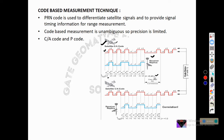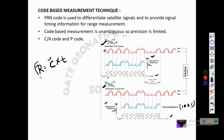The shifting continues until it reaches plus one correlation, which is 100% correlation. The receiver then calculates how much time it took to reach 100% correlation. That time is used to calculate the distance from the satellite. If the time is t, then the distance r is calculated as r = c × t, where c is the velocity of light.